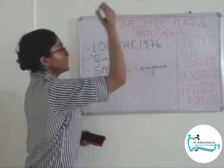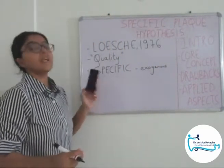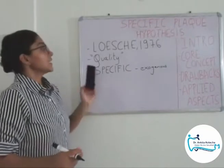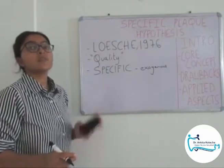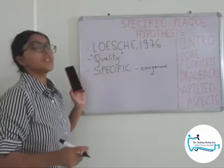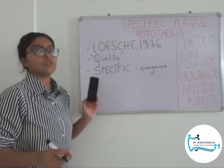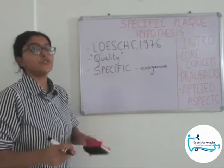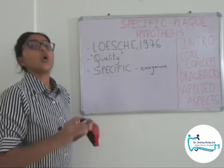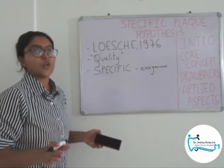This is the core concept of specific plaque hypothesis: quality of plaque and specific microorganisms. That is why the name of the hypothesis is 'Specific Plaque Hypothesis' — because it says only specific microorganisms cause periodontal disease, in contrast to non-specific plaque hypothesis, which said all microorganisms can cause periodontal disease.